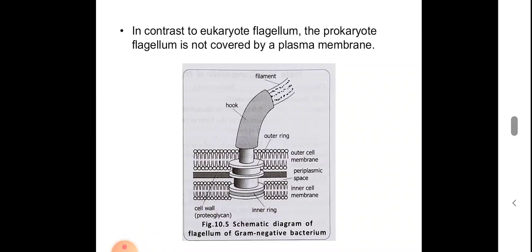This is the structure of a gram-negative bacterial flagellum. Here you can see the hook, the filament, and the rings embedded in the cell membrane — several rings, including inner ring and outer ring.